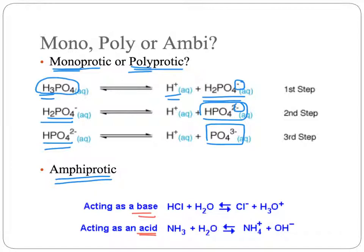In these reactions, we see water first acting as a base, reacting with hydrochloric acid to produce a chloride ion and the hydronium ion — hydrogen has been added to water, giving it one extra positive charge. And if water is reacted with ammonia, NH₃, it gives up its hydrogen, acting as an acid, so that we form the ammonium ion and the hydroxide ion. This finishes up what I wanted to say in this first introduction to acids and bases.